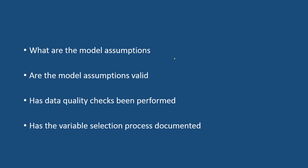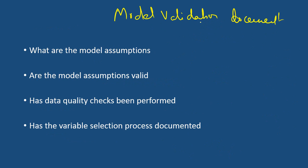All these checklists should be documented in the model validation document. Whenever one does model validation and ensures that all these checklists are followed by the model development team, it should be well documented and all results and outputs should be put in the document, so that if something goes wrong later on it can be referred to, and also in future development this document will be very useful.